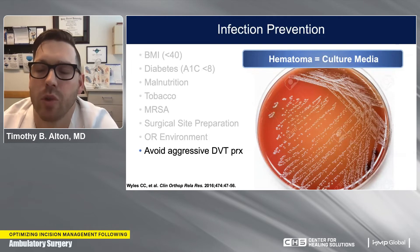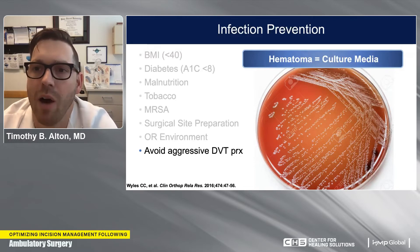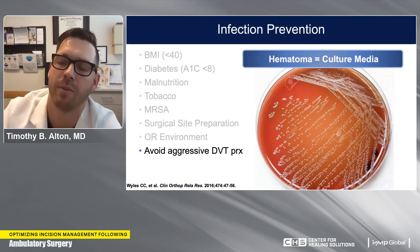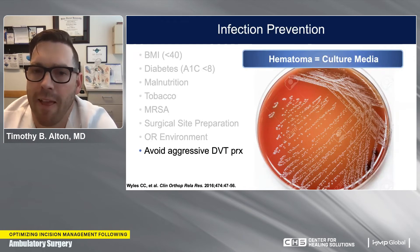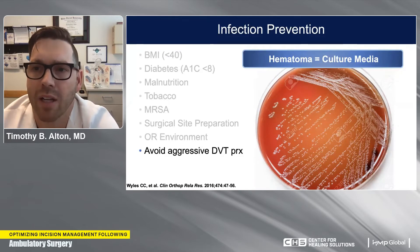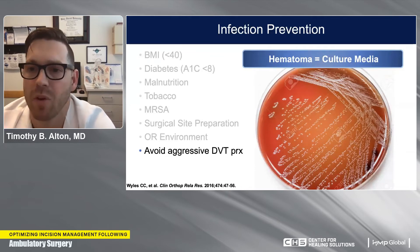DVT or blood clot prevention is another common consideration after joint replacement surgery. The pendulum has swung from very strong blood thinners for everyone to risk-factor-based approaches. If blood is very thin and a large amount enters the knee, that creates a culture medium for bacteria and can increase infection risk. Avoiding a large hematoma in the knee can help decrease infection risk. We try to avoid aggressive DVT prophylaxis medications as much as possible and commonly try to use aspirin whenever it's medically safe.